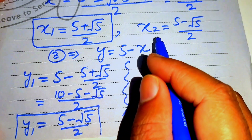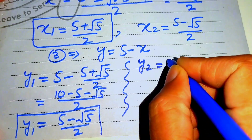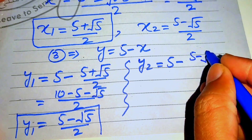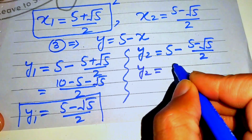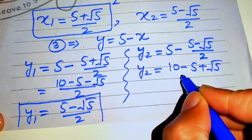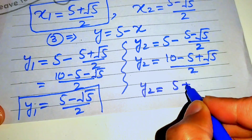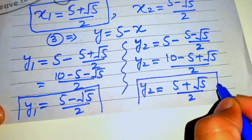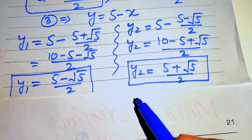Similarly, we find y2 corresponding to x2. y2 equals 5 minus x2, where x2 is (5 minus square root of 5) divided by 2. This gives y2 equals 5 plus square root of 5, divided by 2.